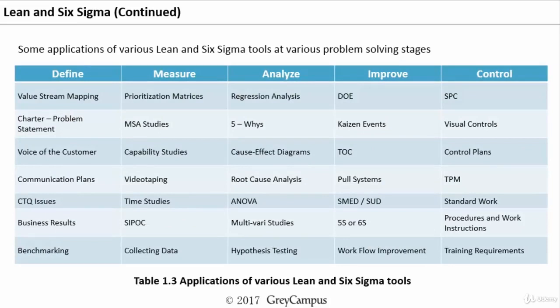The methodology we follow also depends on what type of problems the company is facing. This slide gives an idea of the different Six Sigma and Lean tools used at various phases of a Six Sigma project — Define, Measure, Analyze, Improve, and Control. Exclusively lean tools include value stream mapping, kaizen events, visual controls, pull systems, SMED, and 5S. Exclusive Six Sigma tools include ANOVA, DOE, SPC, and MSA. Common tools for both include root cause analysis, benchmarking, and communication plans.